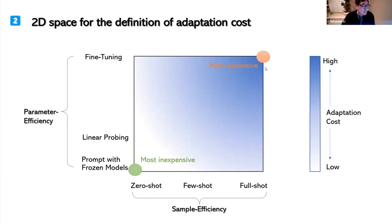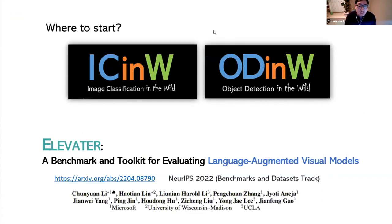Now that we are pursuing foundation models, we have to rethink the best way to adapt pre-trained models. My suggestion is to consider the adaptation cost when we design models. Following this design philosophy — transfer scenarios should be broad, and adaptation cost should be low — we implemented two challenges to evaluate the task-level transferability of visual models: image classification in the wild and object detection in the wild, where the ELEVATOR benchmark serves as the basis for these two challenges.